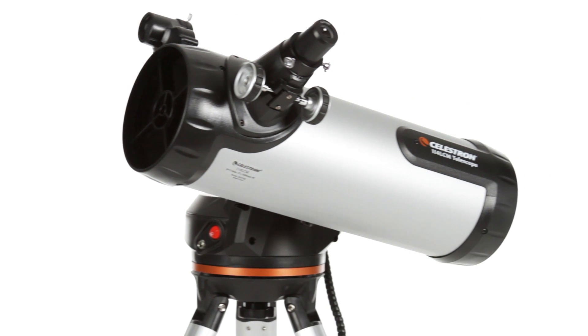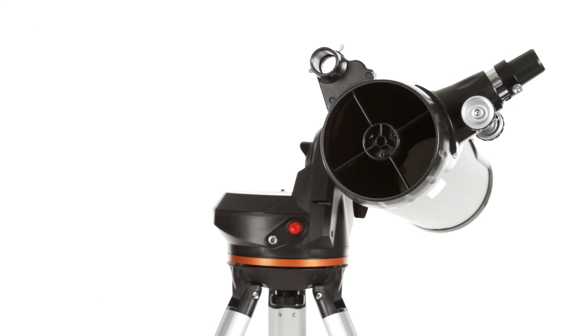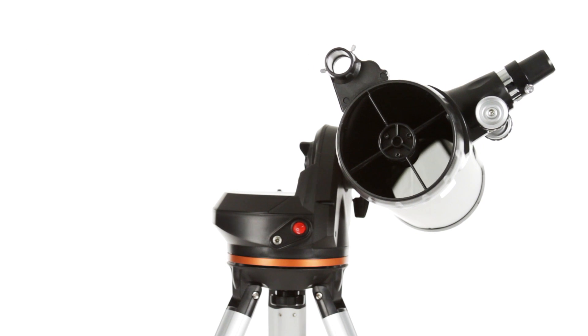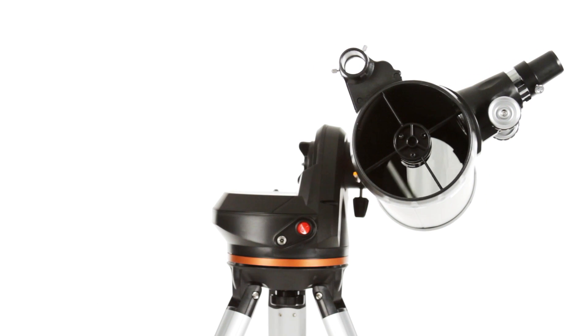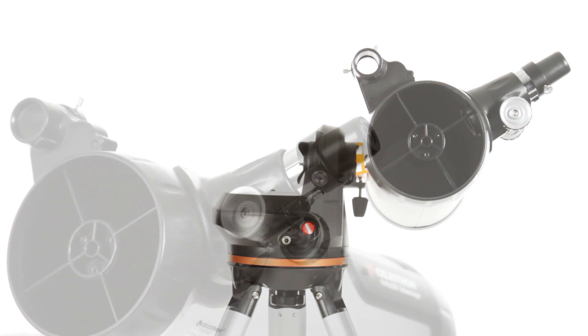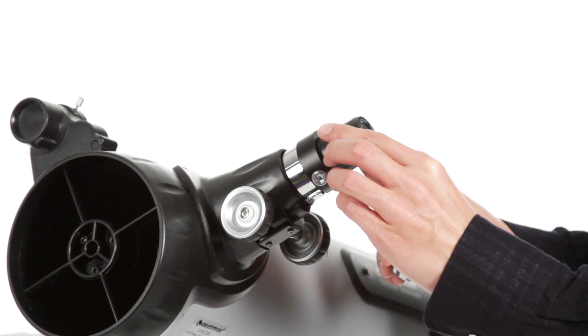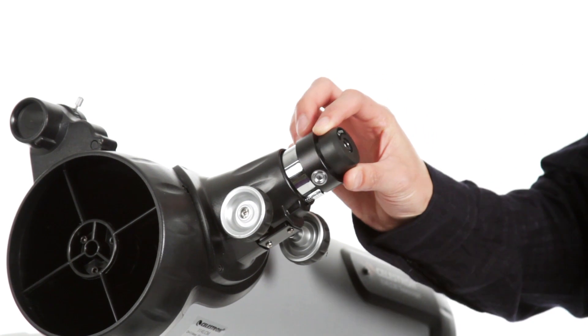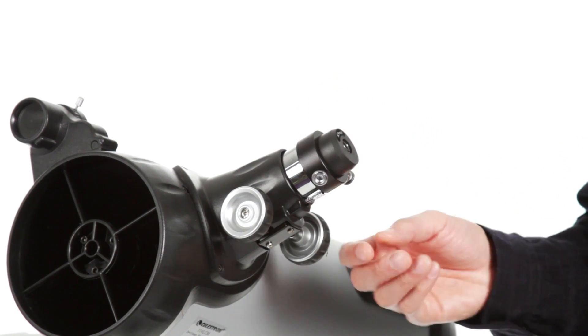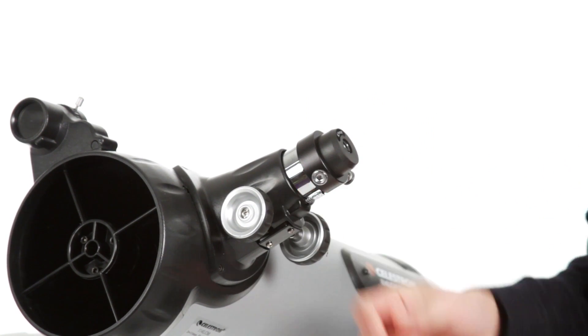With the largest optical tube in the LCM family, the 114 offers a 4.5-inch primary mirror for lots of light-gathering ability. Combine it with the included low- and high-power eyepieces, and you'll enjoy detailed views of the rings of Saturn, the gas clouds of the Orion Nebula, and hundreds of other objects.